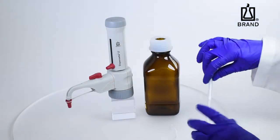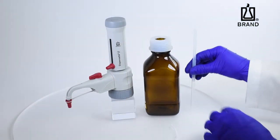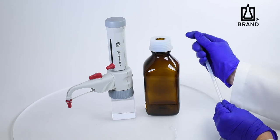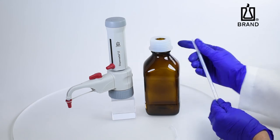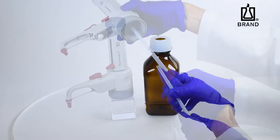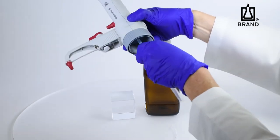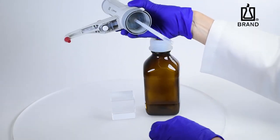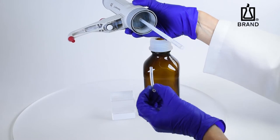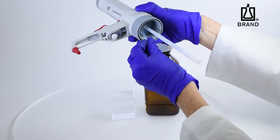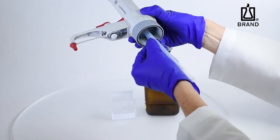Adjust the length of the telescoping filling tube to the height of your bottle and attach. If your dispenser uses a discharge tube with a recirculation valve, the recirculation tube must also be installed. Insert the tube with the opening pointing outward.